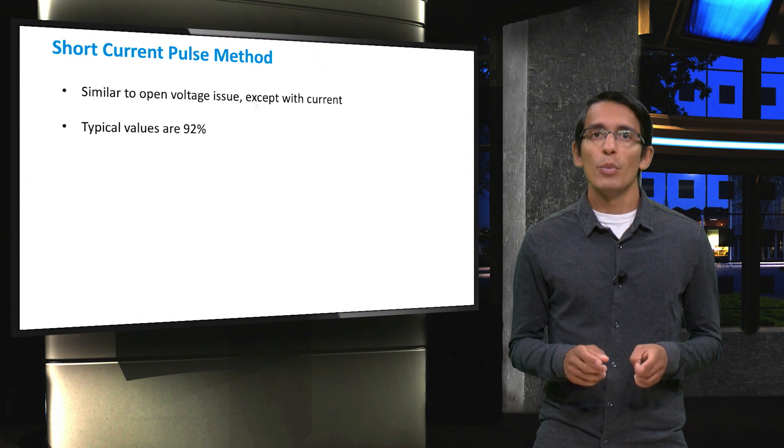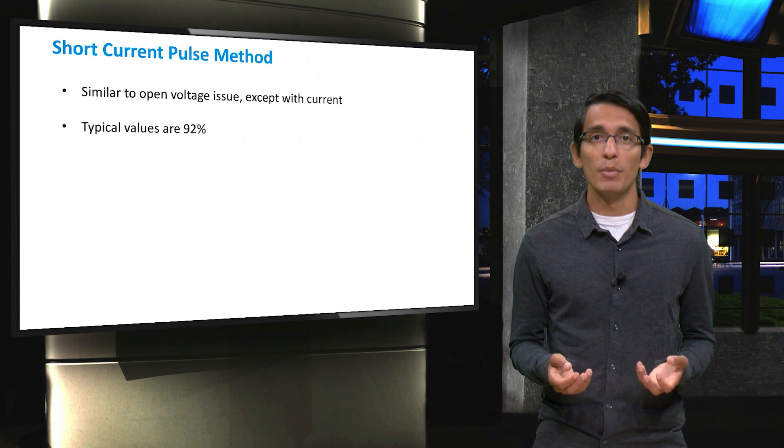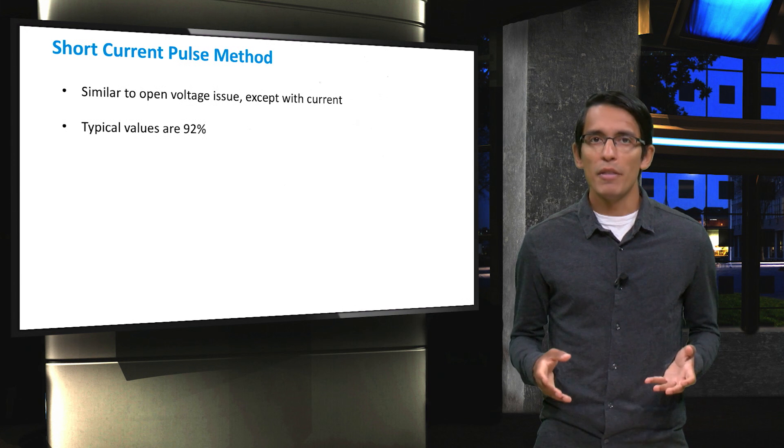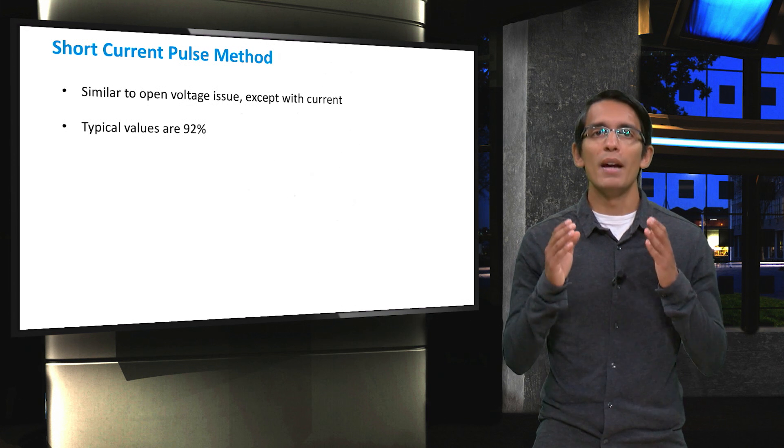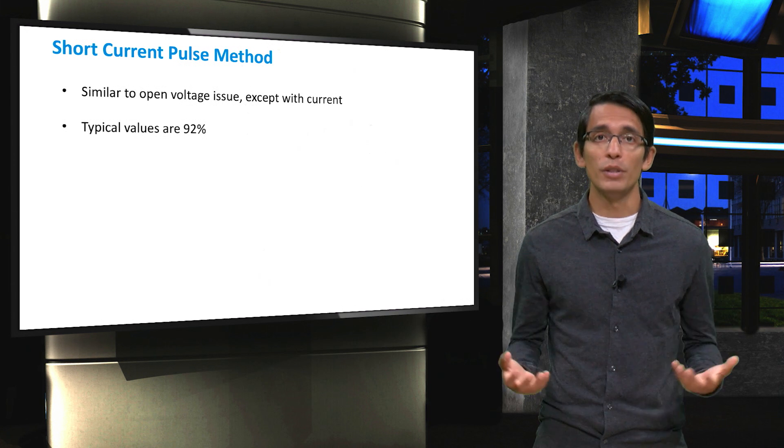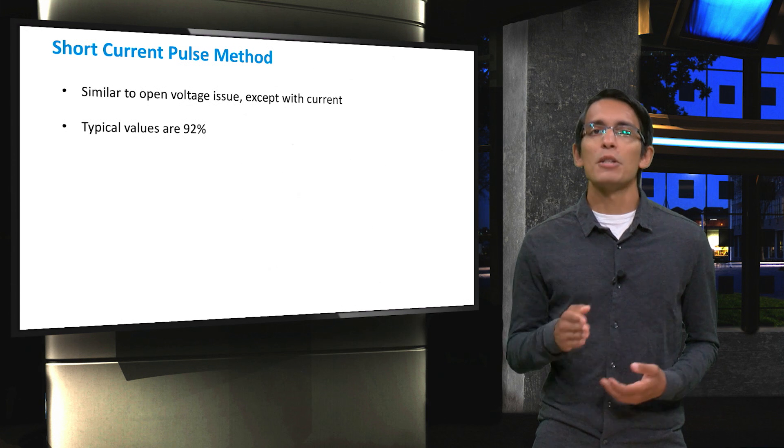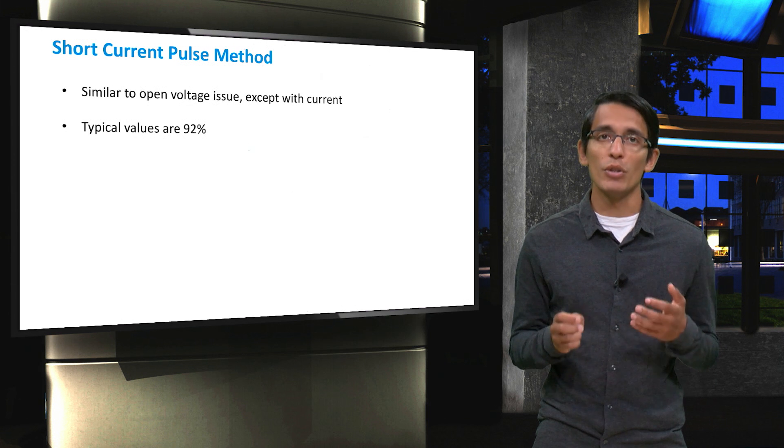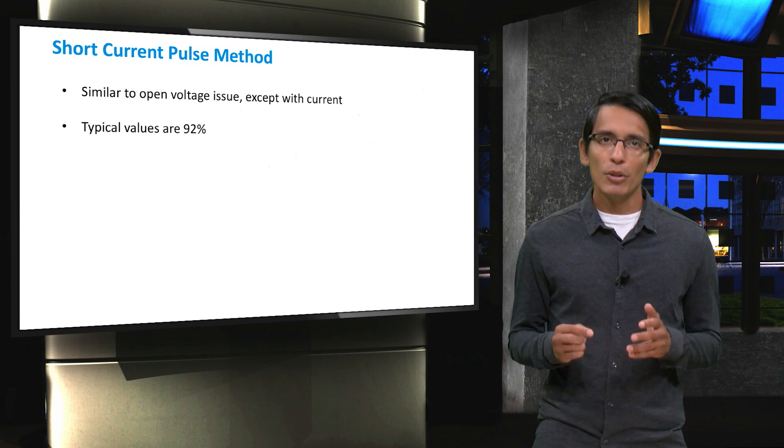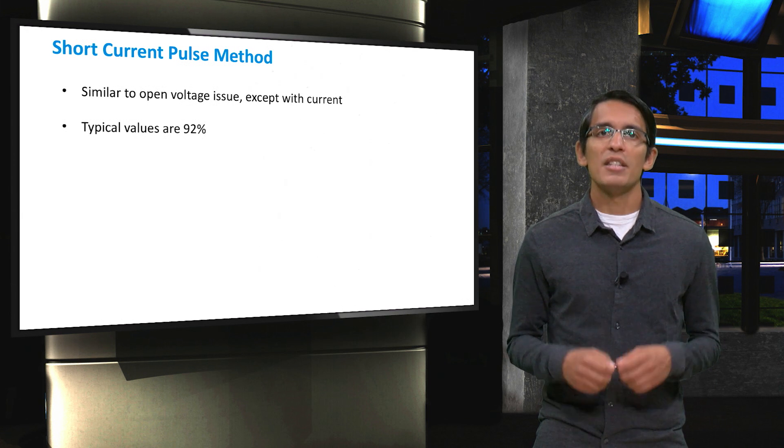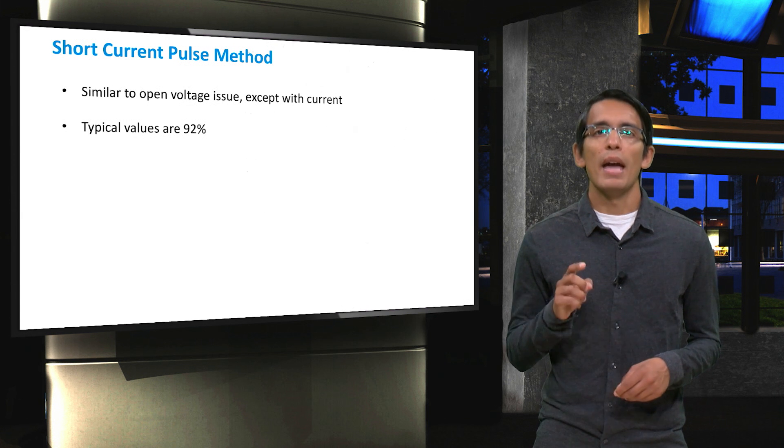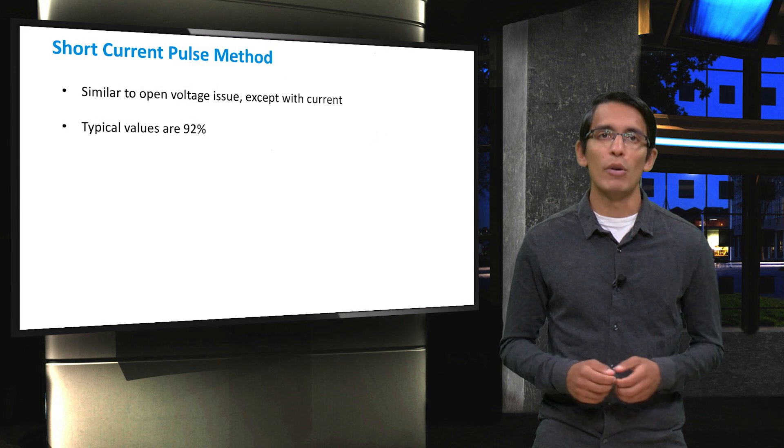Another method that is used, which is very similar to the open voltage method, is the short current pulse method. This method is unique in that it looks at the ideal current rather than an ideal voltage. Here, the maximum power point current is assumed to be around 92% of the short circuit current. Similar to the fractional voltage method, it has to periodically measure the short circuit current, ISC. And in these periodic checkups, the panels are not delivering any power.